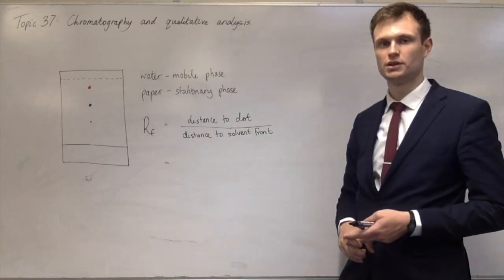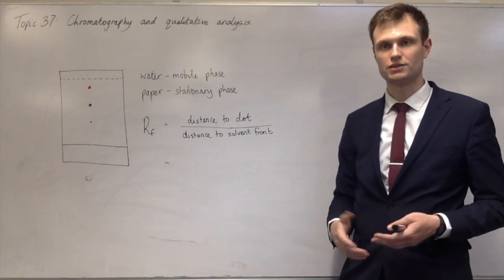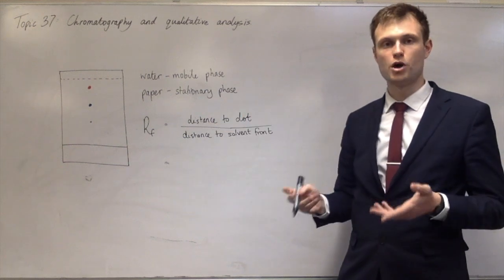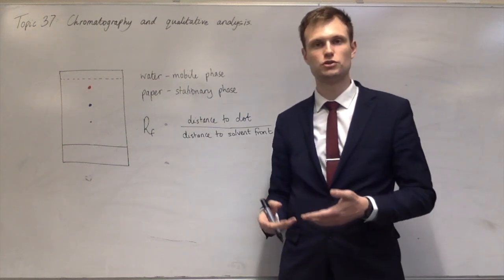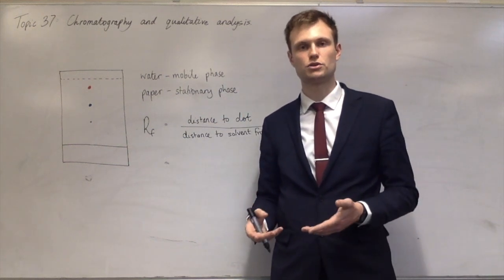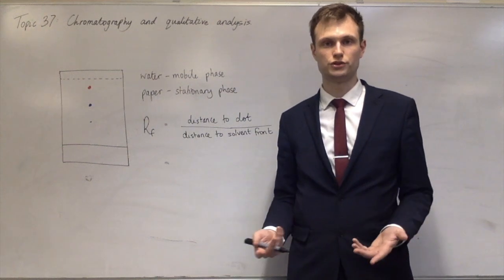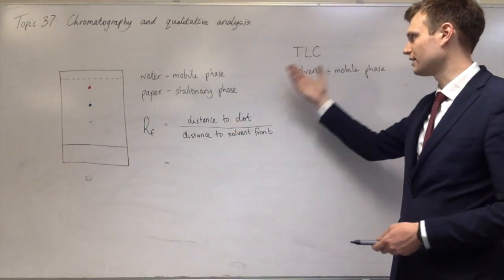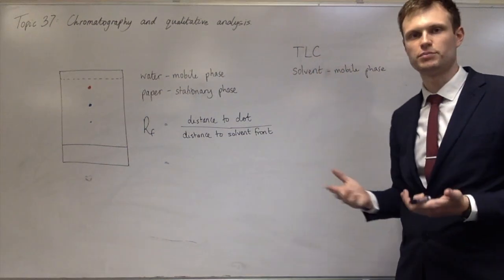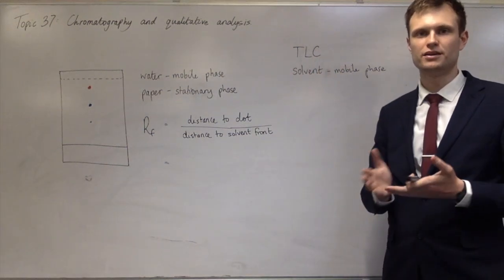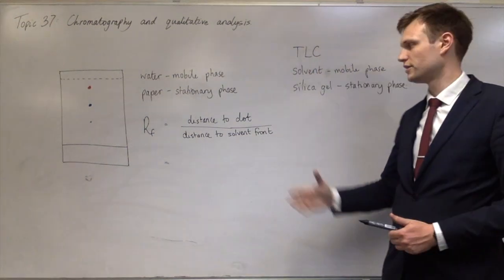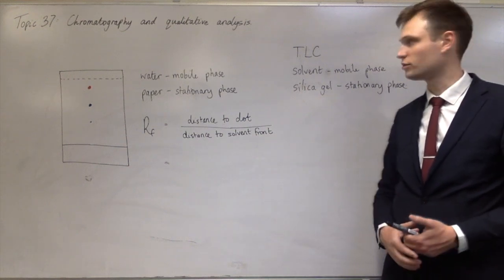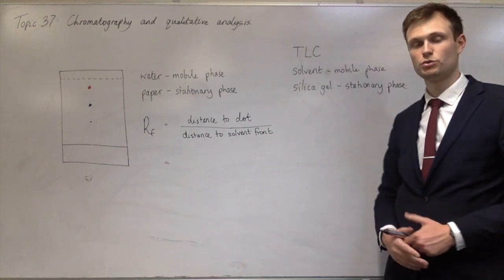All I'm going to change is the mobile phase and the stationary phase. For the mobile phase — that's the solvent — if you do thin layer chromatography, it's still just the solvent that you use. The stationary phase, instead of being paper, is a TLC plate, which is just aluminium with silica gel on it. The RF value is still calculated in exactly the same way. So that's really all TLC is.